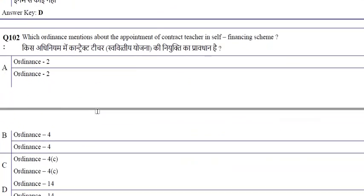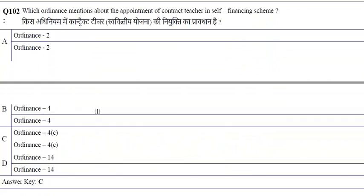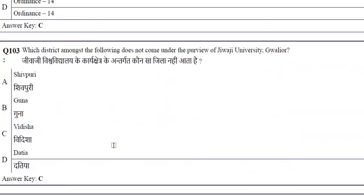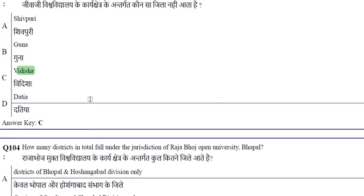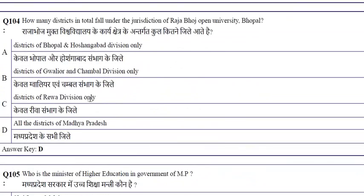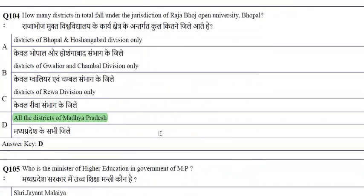Ordinance 4C mentions the appointment of contact teachers in a self-financing scheme. Vidisha does not come under the purview of Jivaji University, Gwalior. All districts of Madhya Pradesh come under the jurisdiction of Raja Bhoj Open University, Bhopal.